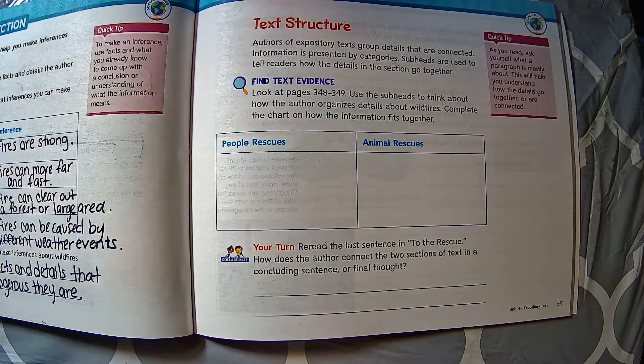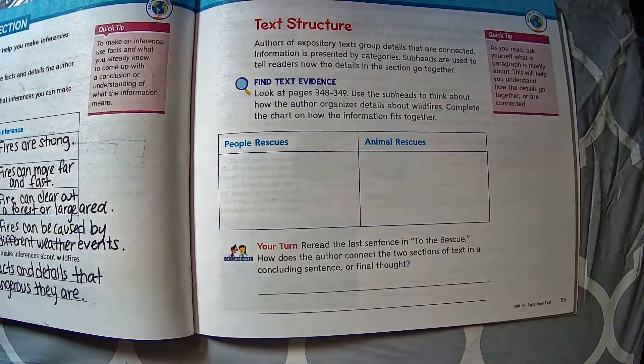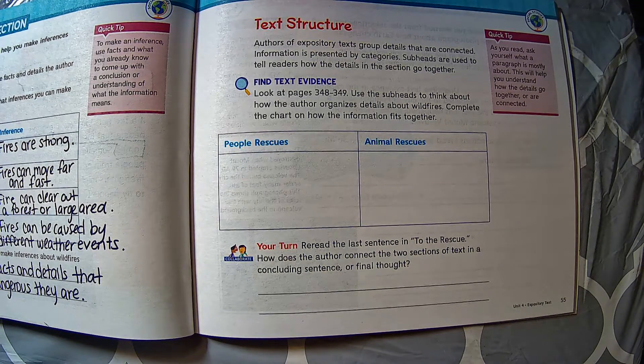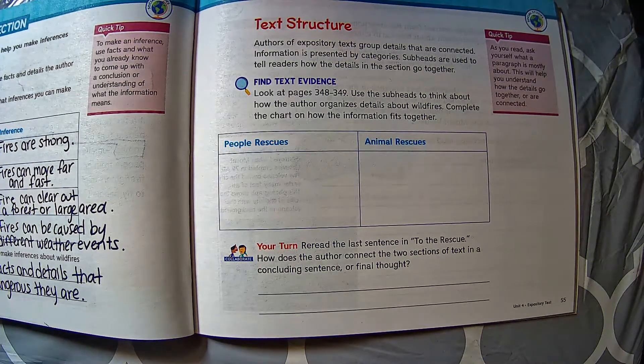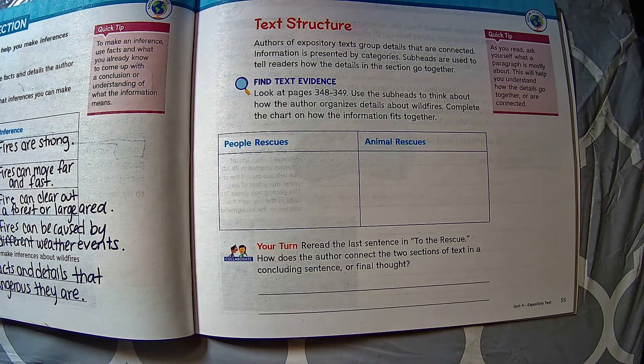Make sure you're on page 55 where we are going to talk about text structure. Authors of expository text group details that are connected information. Information is presented by categories. Subheads are used to tell readers how the details in the section go together.